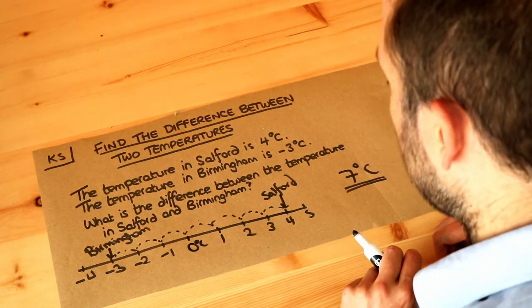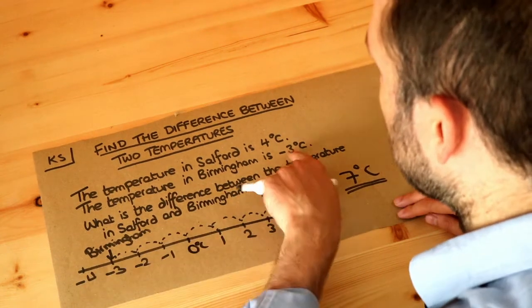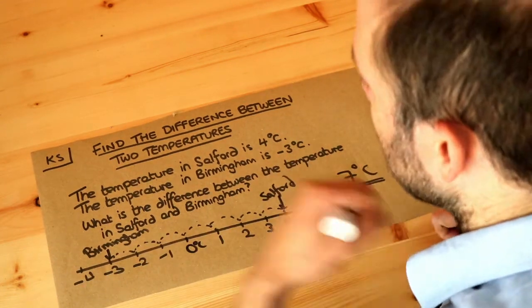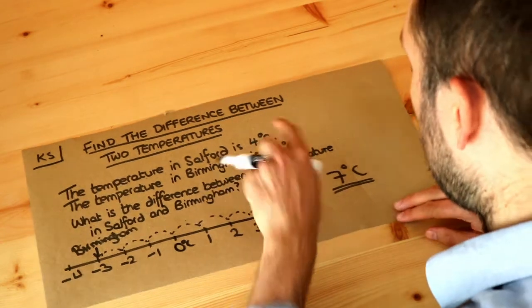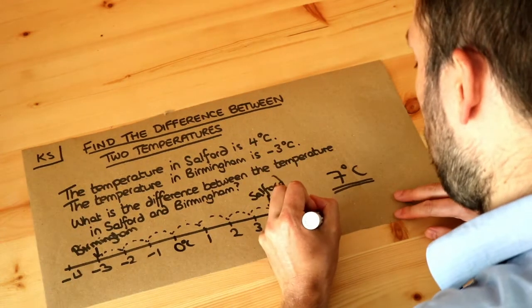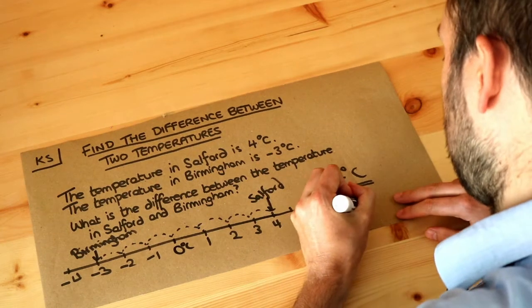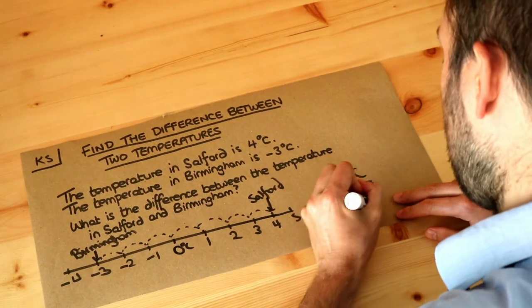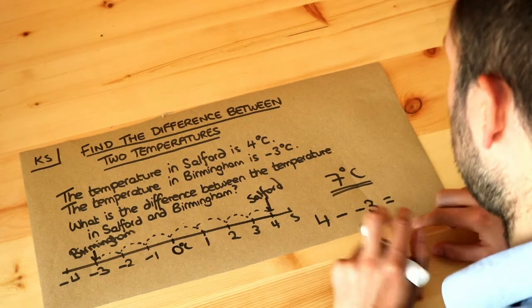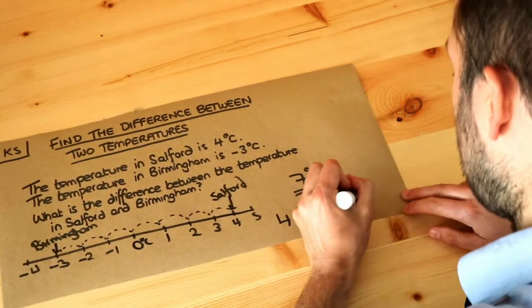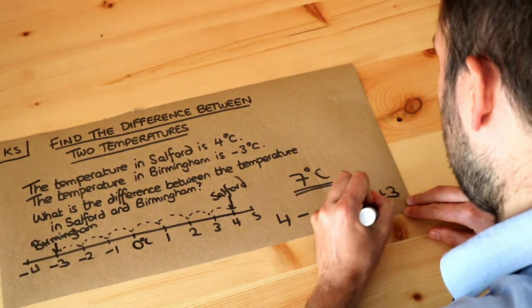The other way to find a difference between two numbers without having to draw this out is just to subtract them. So you subtract two numbers to find the difference. We do the higher number, which is four, and subtract the smaller number, which is minus three. In a previous video we saw that if we subtract a negative number we end up adding, so it actually becomes four plus three, which is equal to seven.